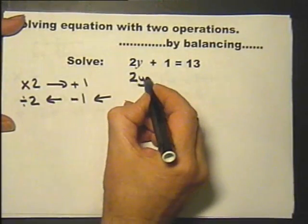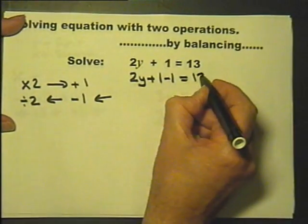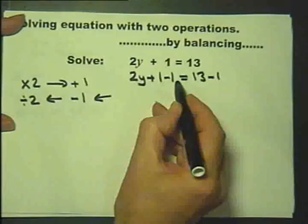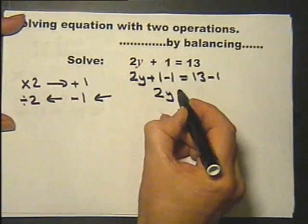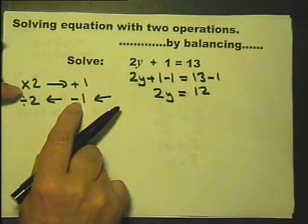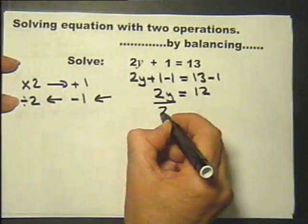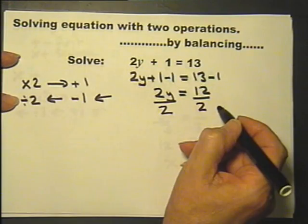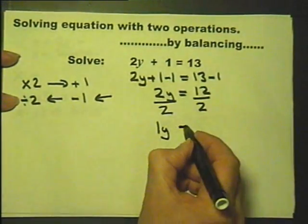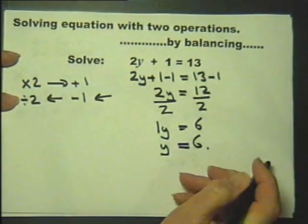So what I'm going to do is I'm going to subtract 1 but I must do it to both sides. Subtracting 1 from this side makes this 0 so I'm left with 2y plus 0 equals 13 minus 1. Just done that so now I do this divide by 2 and I must do it to both sides so I divide both sides by 2. 2y divided by 2 is 1y, 12 divided by 2 is 6. If 1y is 6 then y itself is 6.